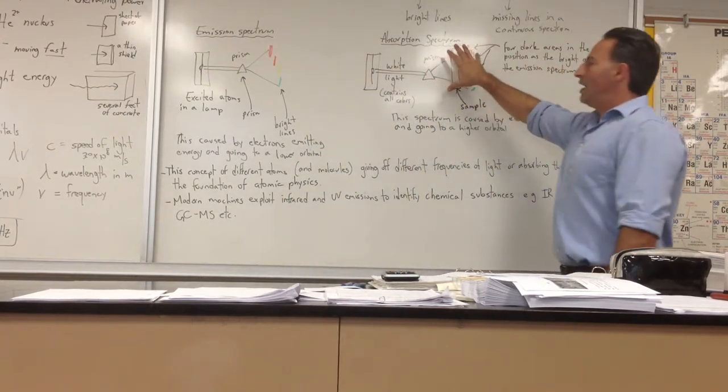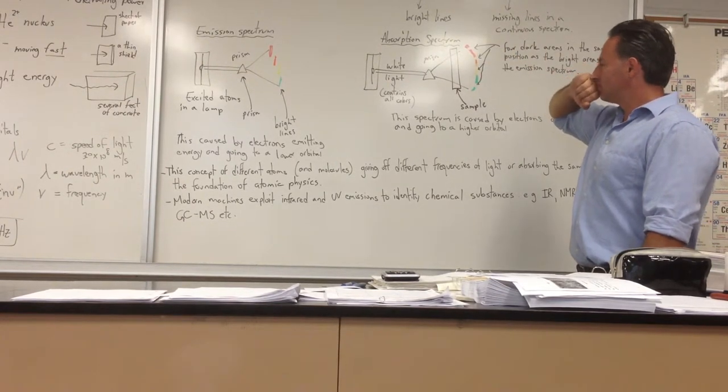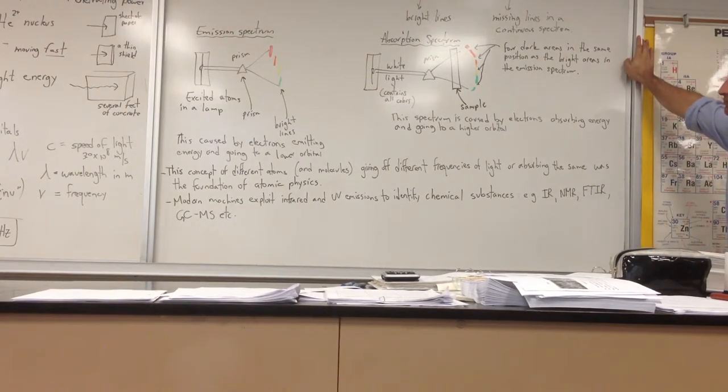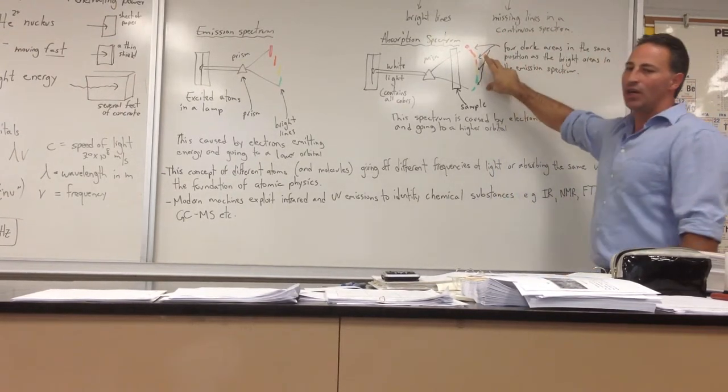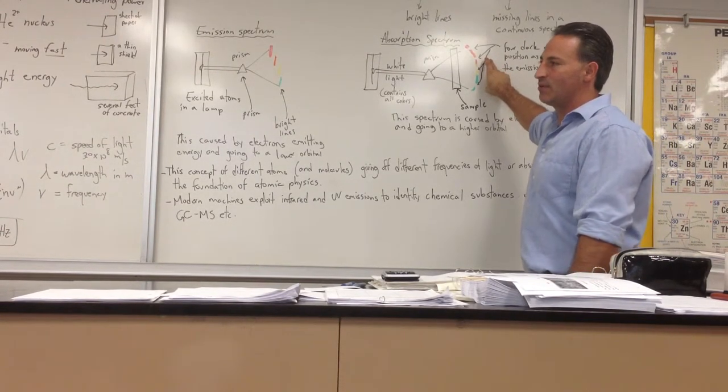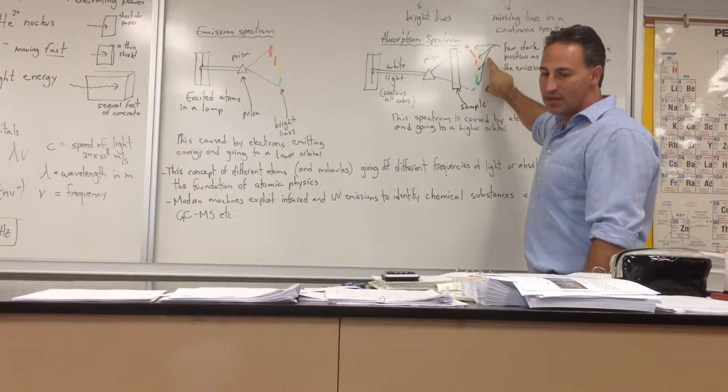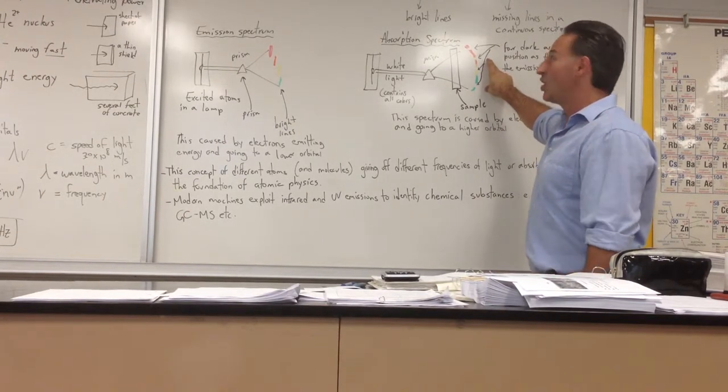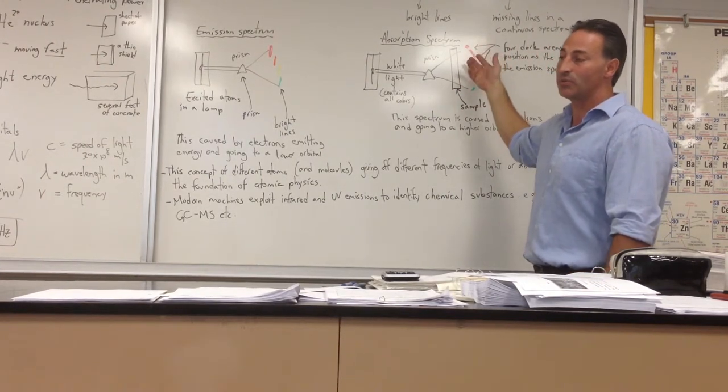So this property of matter is exploited. [PA interruption about senior football] The absorption spectrum is exploited by modern machines called flame ionization spectrophotometers to identify the presence of different elements in a sample. Say if people wanted to find out if you had arsenic in your blood. They would extract a sample of your blood, inject it into the flame ionization spectrophotometer, and if there was any arsenic there, you would get the characteristic absorption band that's associated with arsenic, and they would be able to prove that you have arsenic in your blood.